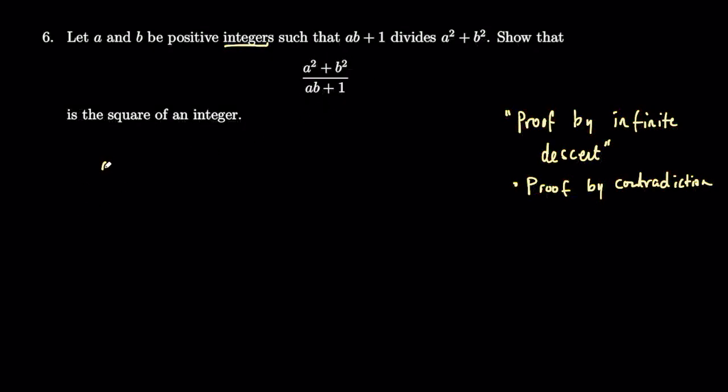So let's get on with this now. It starts off by letting this expression equal some integer n. And we're going to assume that this n is not a perfect square because it's asking us to show that it is the square of an integer. Actually, before I start that, let's rearrange this equation. We can rearrange this in the form a squared minus n times b times a plus b squared minus n equals 0.